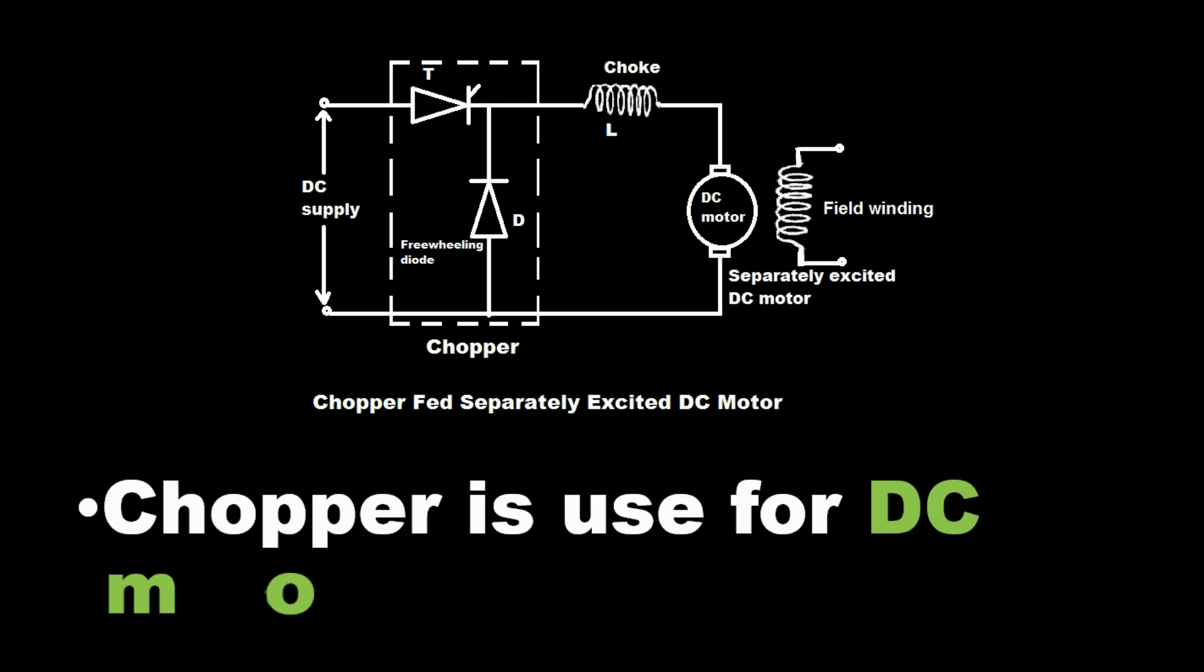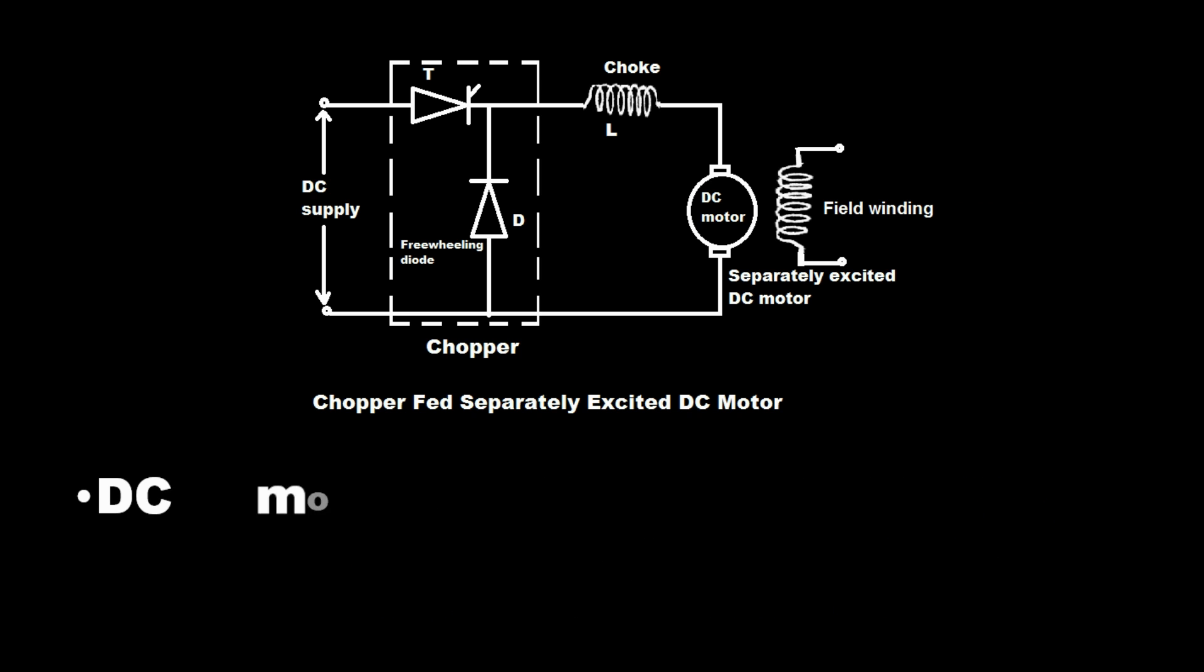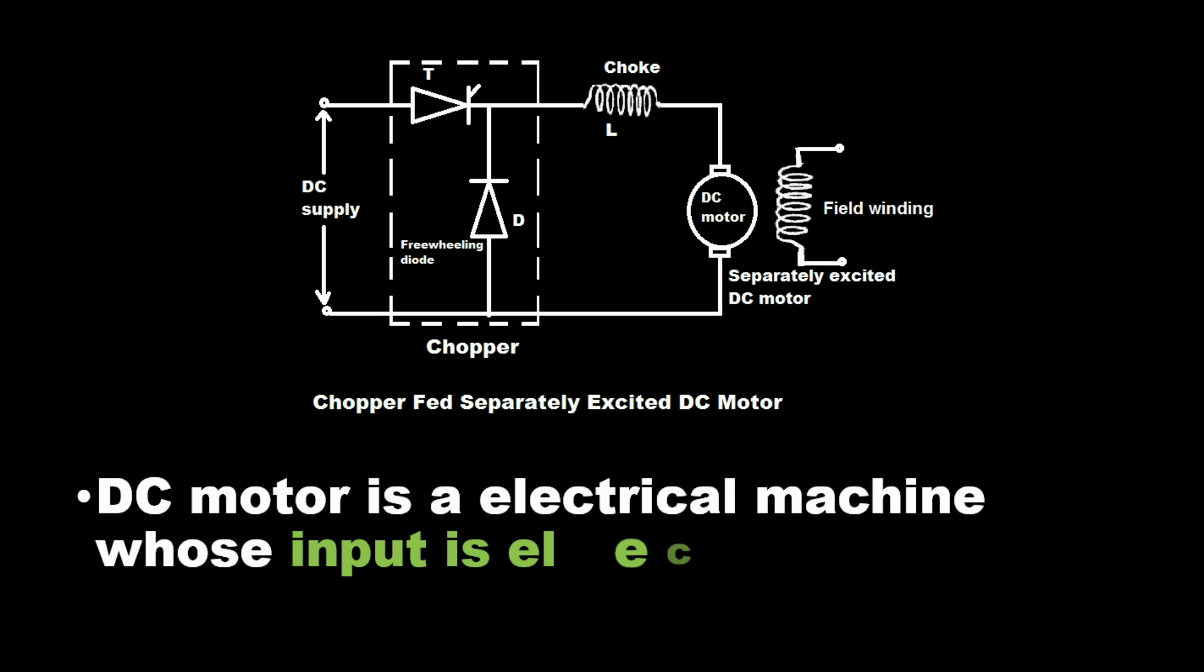Chopper is used for DC motor speed control. DC motor is an electrical machine whose input is electrical and output is mechanical.